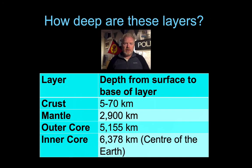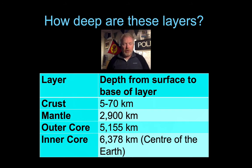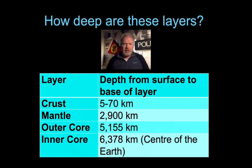These four layers, from the surface going down, are: the crust, then the mantle, then the outer core, and finally the inner core. That goes all the way down to the center of the Earth, about 6,378 kilometers down, although that distance varies depending on whether we're at the pole or the equator. The Earth is a bit fatter around the middle than at the poles, so the Earth isn't spherical — it's what we call an oblate spheroid.